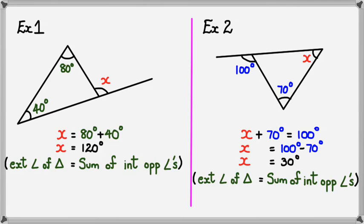That's all you need to know for the exterior angle of a triangle: the exterior angle equals the sum of the two interior opposite angles. That's all for this session — thanks for watching.